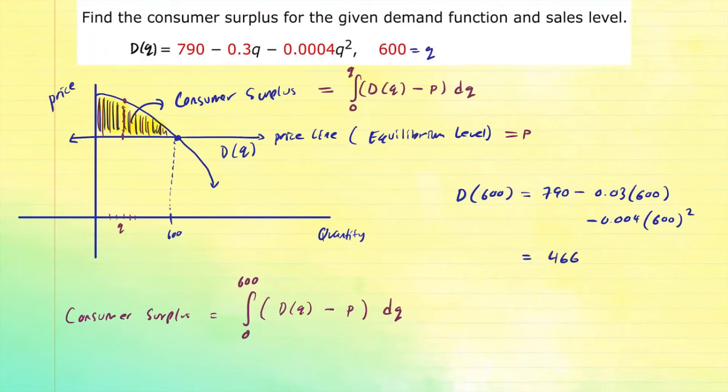And then when you do that calculation, you'll get about 466. That's the price. So the price line here is 466. That's the equilibrium level. Now we're ready to integrate.